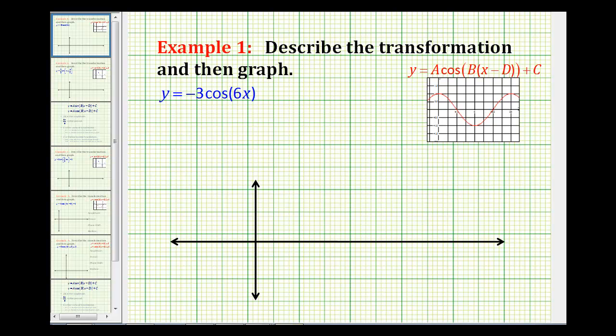Welcome to the first of several examples on describing and graphing trig transformations. Here we have y equals negative three cosine six x.